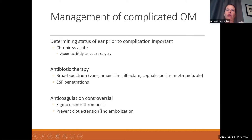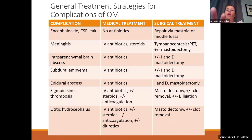We'll talk about anticoagulation, as many complications cause thrombosis. It's controversial in both kids and adults, but we want to prevent clot extension and embolization. For the management table: encephalocele and CSF leak often don't get antibiotics because you don't want to mask meningitis — it's a straightforward surgical treatment. These are most often post-surgical complications. Meningitis is treated with IV antibiotics and steroids — steroids are very important to decrease inflammation in the inner ear.